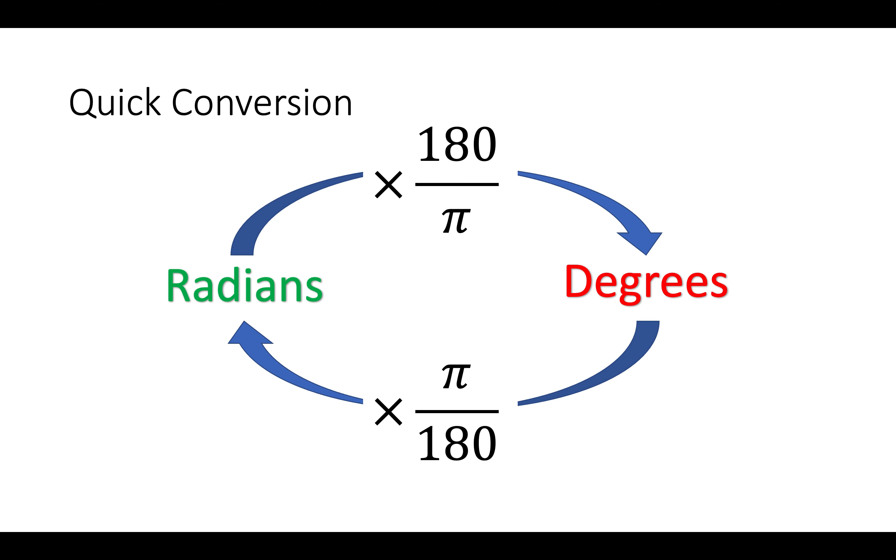To convert from radians to degrees, the easiest way is you times by 180 and divide by π. To go from degrees to radians you do the opposite: you times by π and divide by 180. If you remember this, you can convert between radians and degrees or degrees and radians super easily.